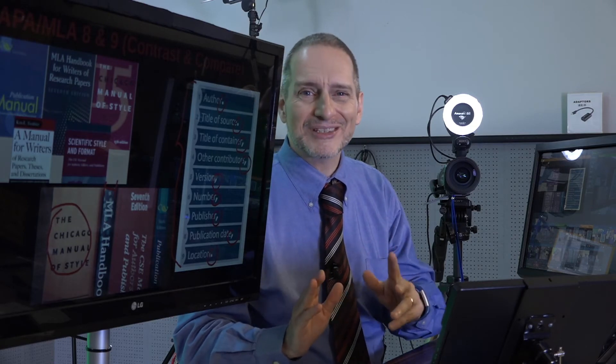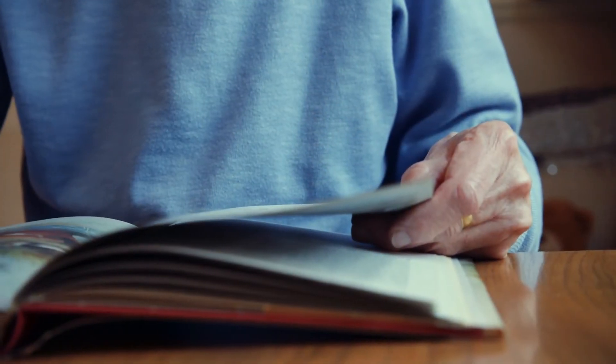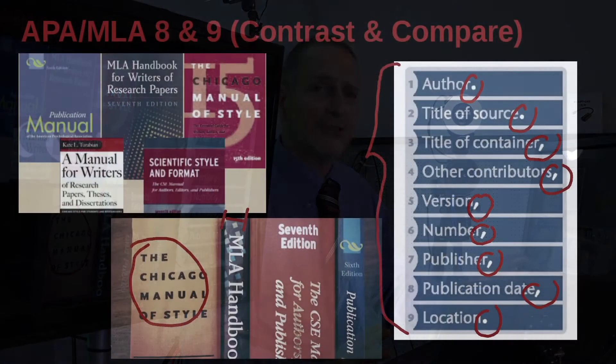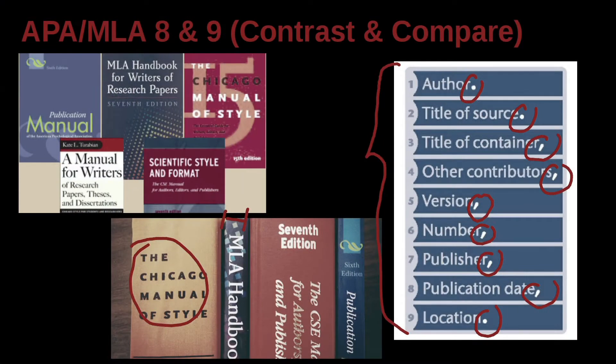MLA, on the other hand, is much more focused on their goal, which is: can the reader find the reference? That's the main goal they lay out. And they try to help you do that by giving you this graphic, saying include these things and the reader should be able to find what they're looking for.